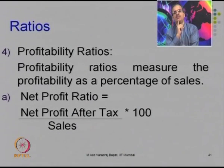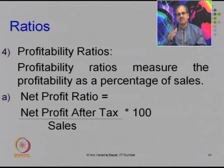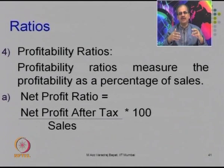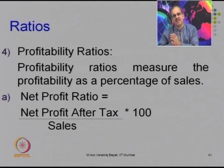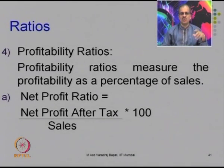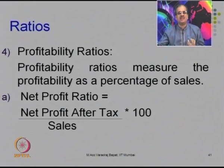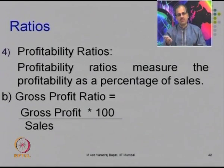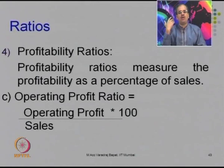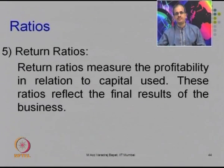The next important type are profitability ratios. Every stakeholder — owners, bankers, employees — is interested in profitability. Profitability ratios try to find how much profit is earned by the company relative to the sales generated. One important profitability ratio is the net profit ratio, which finds net profit after tax as a percentage of sales. There is also the gross profit ratio, which links gross profit to sales, and the operating profit ratio, which links operating profit to sales.